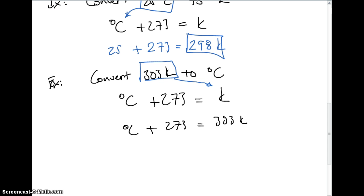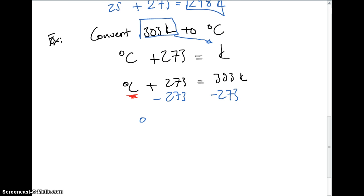And so what we're going to do is to solve it, to solve for degrees Celsius because we're adding here, is we're going to subtract 273 from both sides. And what we're going to get there is we're going to get an answer of 30 degrees Celsius, and that's our answer.